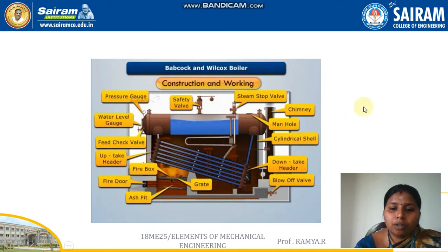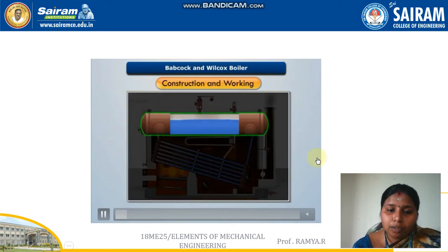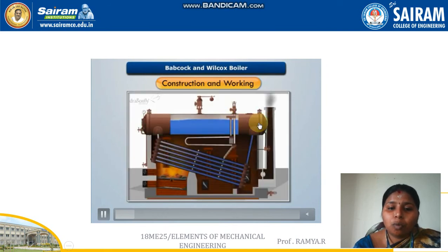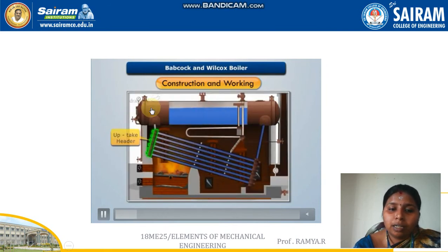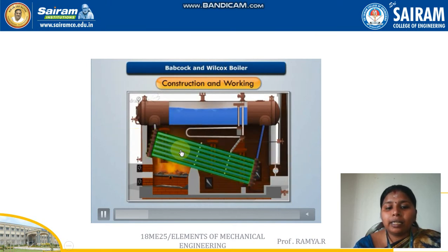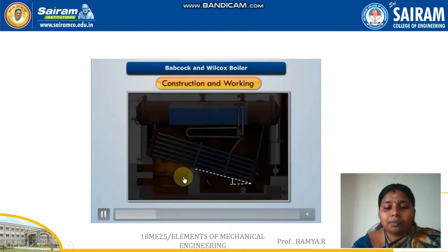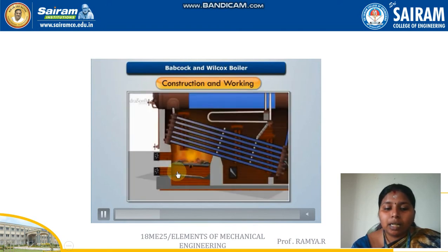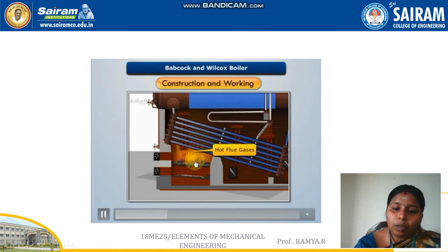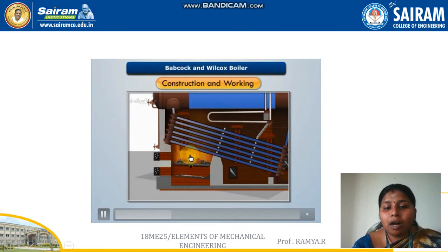This is the construction and working of the boiler as shown in the video. The boiler drum is filled with water and a water level indicator checks the water level. Through the downtake header, water enters the inclined tubes — placed at 10 to 15 degrees. The externally fired furnace burns solid fuel — coal — producing hot flue gases that pass through and around the tubes, heating the water.